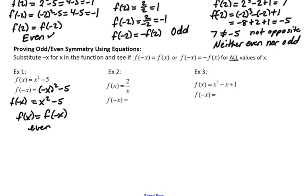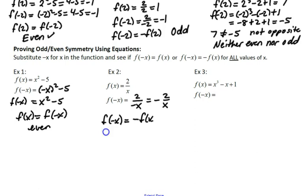Now let's do the same thing with our second example. f(x) is 2 over x, and f(-x) is 2 over negative x. Well, 2 over negative x is the same as negative 2 over x. So f(-x) is the negative of f(x) — this is negative f(x). So this is an odd function.